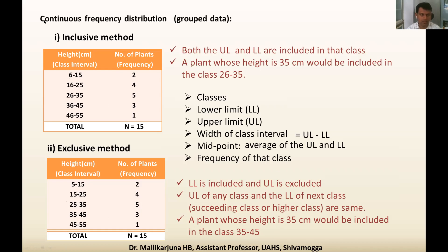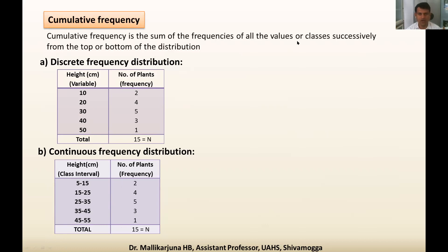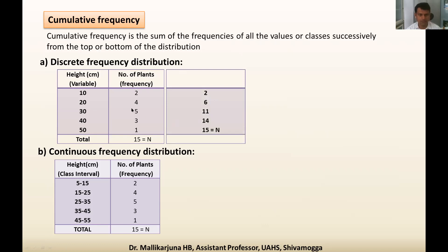Both inclusive and exclusive methods come under continuous frequency distribution. Earlier we discussed discrete frequency distribution — now this is continuous frequency distribution, also grouped data. From both types of frequency distribution we can derive cumulative frequency. Cumulative frequency is the sum of the frequencies of all values or classes successively from the top or bottom of the distribution — similar to a cumulative grade point, meaning adding those frequencies.